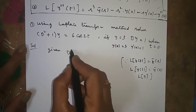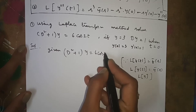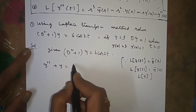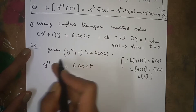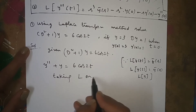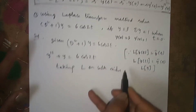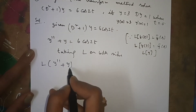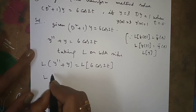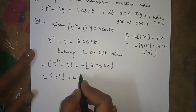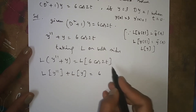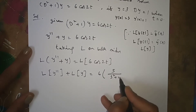The given equation is (D² + 1)y = 6cos2t, which means y'' + y = 6cos2t — both are the same, since D² means the second derivative. Taking L on both sides: L{y'' + y} = L{6cos2t}. Splitting: L{y''} + L{y} = 6·L{cos2t} = 6·s/(s² + 4).